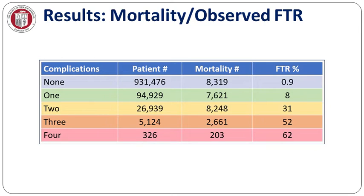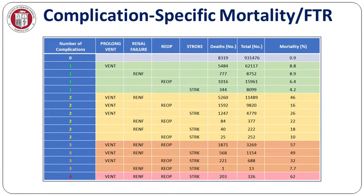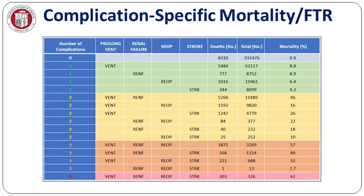Moreover, specific combinations of complications differed quite dramatically in their impact. For example, looking at isolated complications in the graph — prolonged ventilation as an isolated complication was associated with a mortality of 8.8%, and isolated renal failure as an isolated complication was associated with a mortality of 8.9%. However, when the two were combined, mortality jumps to 46%, more than four times either of them individually. Clearly, specific combinations of complications differed quite dramatically in their mortality impact.